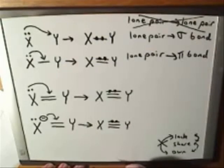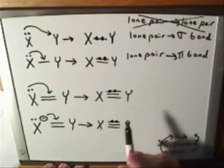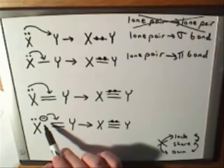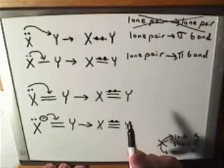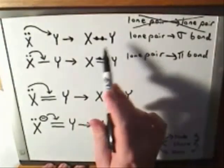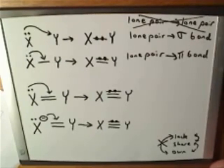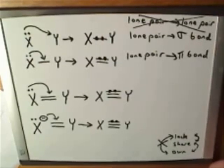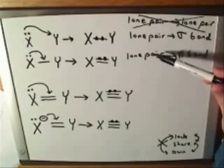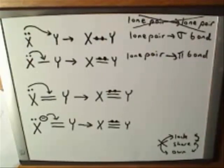I'll remind you that at this introductory portion of the videos, we're not really worrying about what the correct charges are on all these atoms. I went ahead and erased this negative charge because that was pretty obvious. But we're not worried about the correct charges on all the other X's and Y's. We're just learning about when to draw or erase lone pairs and when to draw or erase bonds — we're not worried about getting the charges right yet. This is just one more example of a lone pair to pi bond transition.